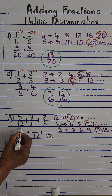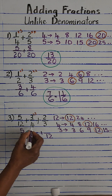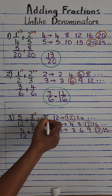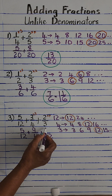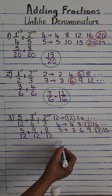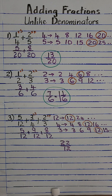For 5/12, the denominator is already 12, so it stays as 5. What did we do to 4 to make 12? Multiply by 3. So 3 times 3 is 9. What did we do to 3 to make 12? Multiply by 4. So 4 times 2 is 8. Now we have all fractions with a common denominator, so we add the numerators: 9 plus 8 is 17, plus 5 is 22 — giving us 22 over 12.